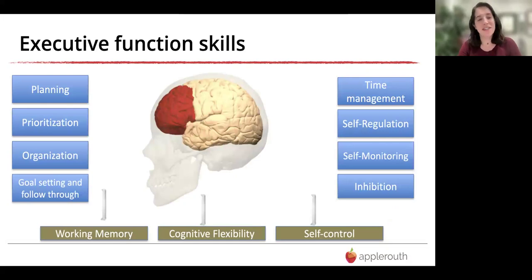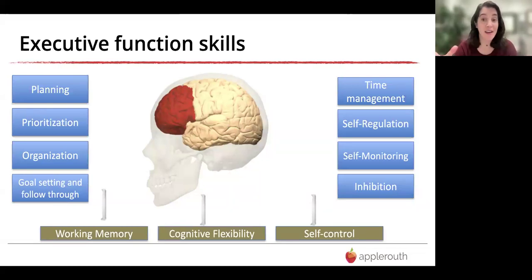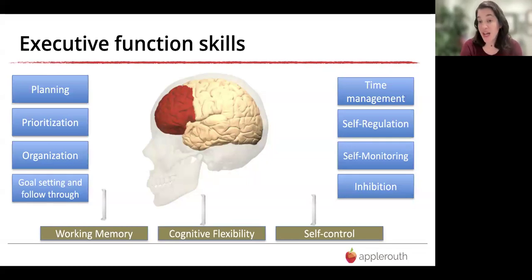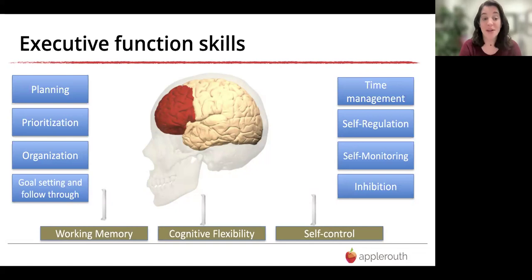I've been talking a lot about executive functioning skills, so let me define what those are. When I'm talking about executive functioning I'm talking about: the ability to plan — 'I've got this paper in two weeks, how am I going to get it done?'; prioritization — knowing which of your tasks needs to come first; organization — knowing where your papers are or remembering to bring homework to school; and goal setting and follow-through, which can be really hard if you're not good at planning, prioritizing, or organizing.